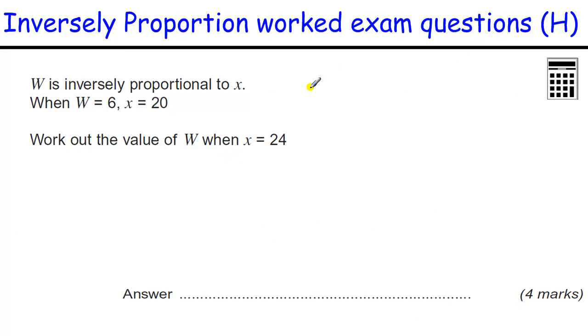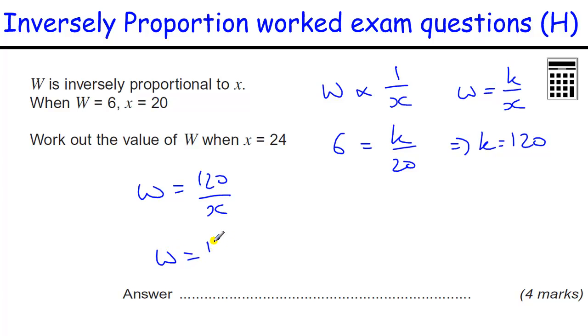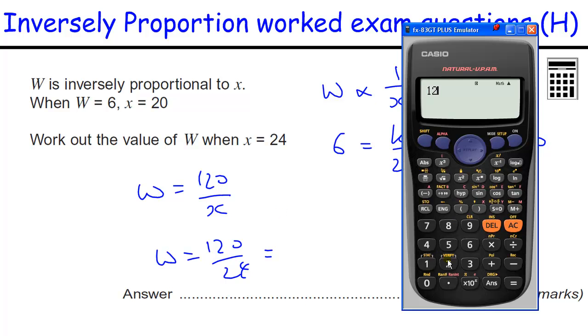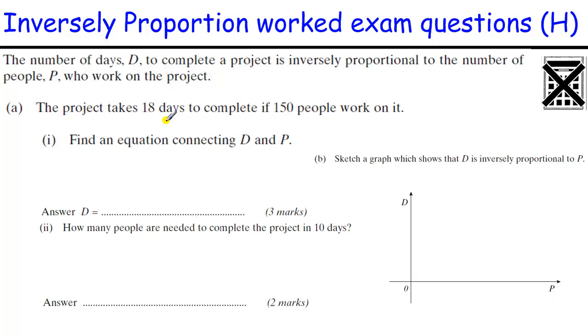W is inversely proportional to X, so W is proportional to 1 over X. So W equals K over X. W is 6 when X is 20, so that implies K equals 6 times 20, which is 120. So W equals 120 over X. When W equals 5, X equals 120 divided by 5. Calculator allowed, so that equals 24. Should have known that really.